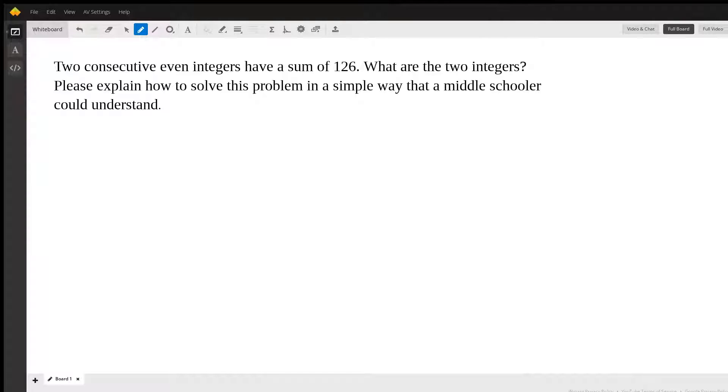Hi, this is Sammy W. And today I'm going to help with the following question. Two consecutive even integers have a sum of 126. What are the two integers?